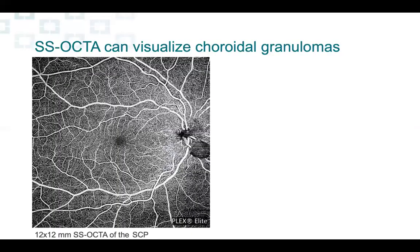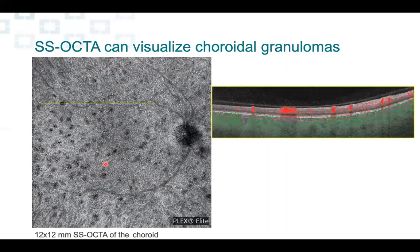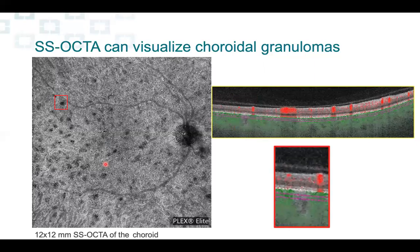This is the 12×12 swept-source OCTA of the right eye. This is the superficial capillary plexus. If we go deep into the choriocapillaris and into the choroid, you see lots of these flow voids — round, small in appearance — which mirror what we were seeing in ICG. We take a slab of the OCT B-scan with superimposed flow, and you see that one of these flow voids corresponds very well to a lesion in the choroid which is a mass blocking the blood flow. This is a granuloma of the choroid.